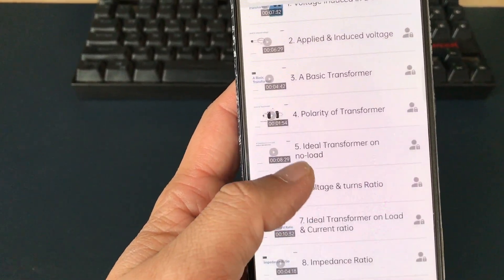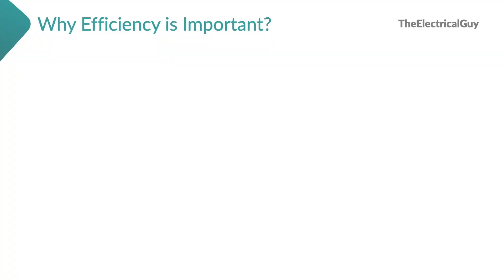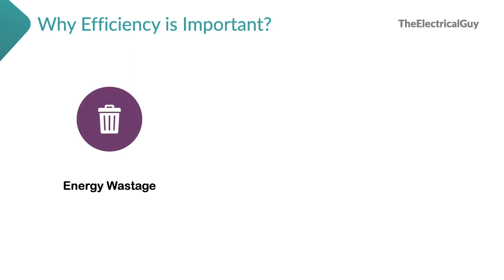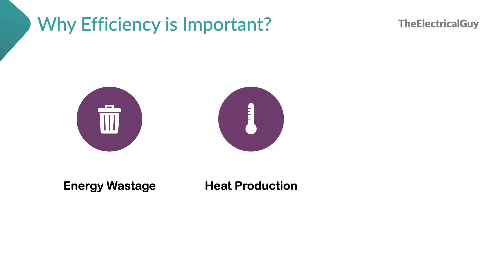Let's talk about why efficiency is important and what are the effects of low efficiency. For understanding purpose, let's stick to the motor example, but you can connect this to any other electrical devices. Poor efficiency means the motor is generating more non-useful energy than useful energy — the input energy is getting wasted in producing non-useful output. Non-useful output, the majority of the time, means production of heat. As efficiency decreases, heat increases, which causes a significant increase in temperature of the device. High temperature is one of the biggest concerns in developing reliable electrical or electronic devices.